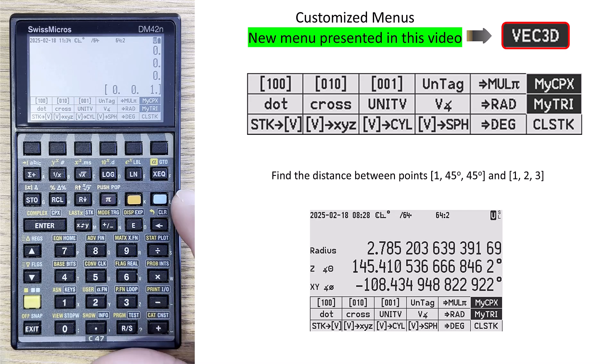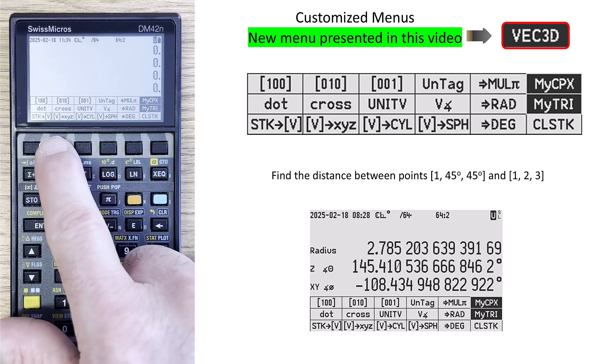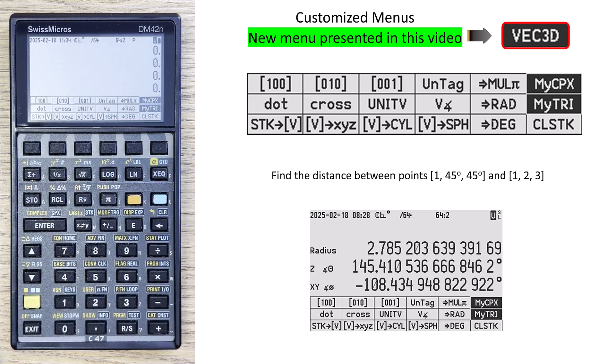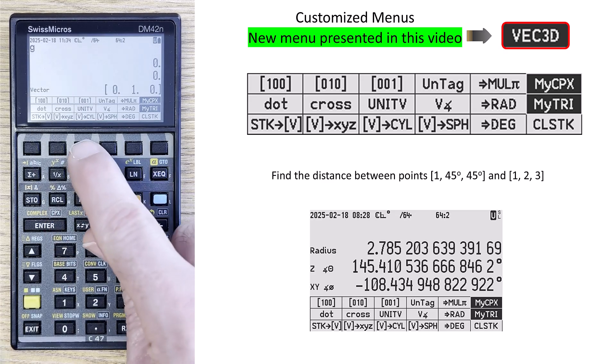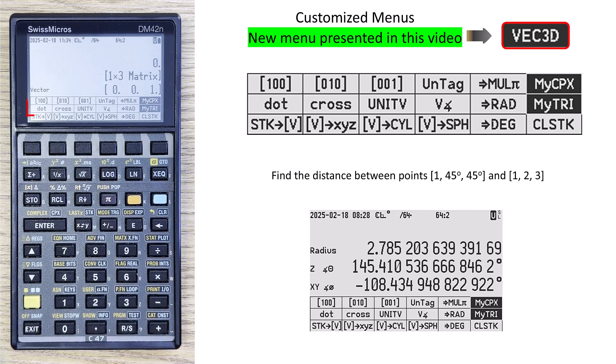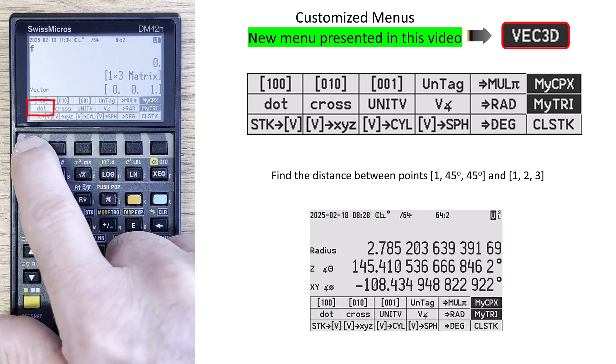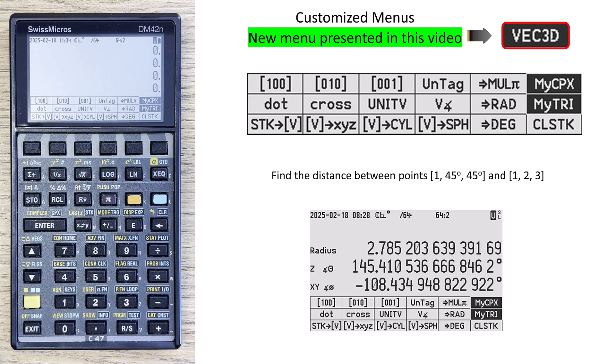And one more demonstration, just to clear that out. If I take the Y vector, for instance, and the Z vector, and I take the dot product of these two, I get a scalar answer of zero, which makes sense. I think I've now touched on all the features in this new menu.